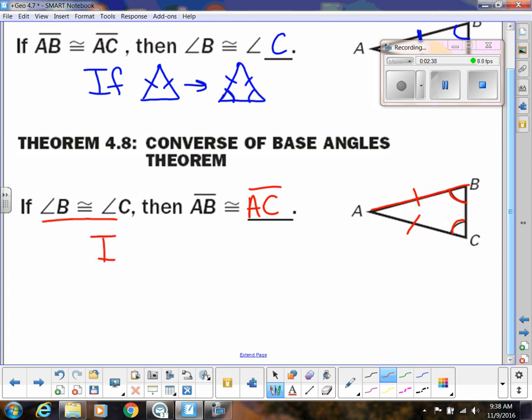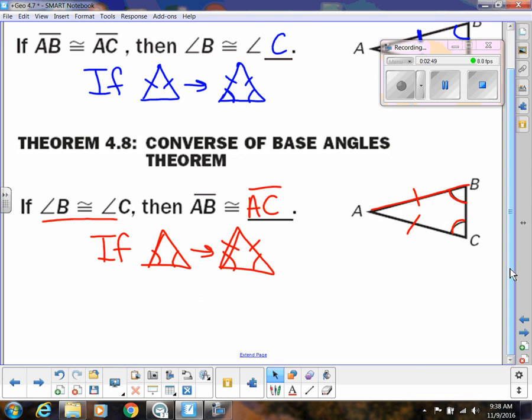Symbolically, you might want to write this. So if I know this, then I know this. So notice that we're ending in the same place where we know both the sides are congruent and the base angles are congruent, but what we start with is different.